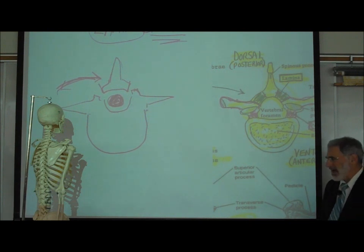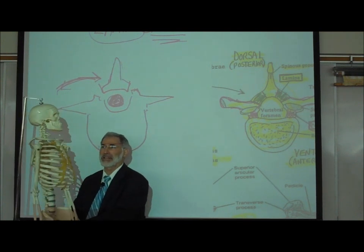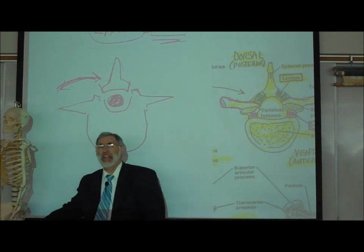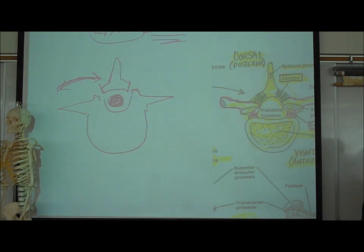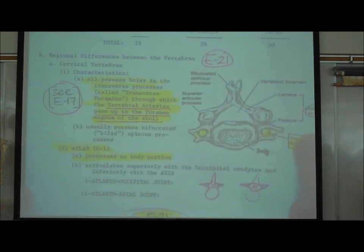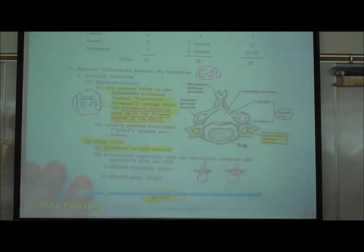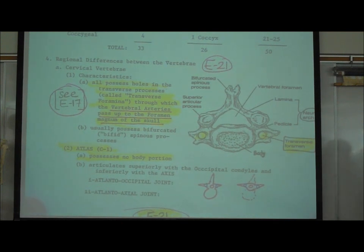A real living bone is in fact alive — it has living cells in it, which is why a fractured arm or leg bone can grow back together. On page E21, we discuss how cervical, thoracic, lumbar, sacral, and coccygeal vertebrae differ from one another and how to recognize the different vertebrae of different regions.